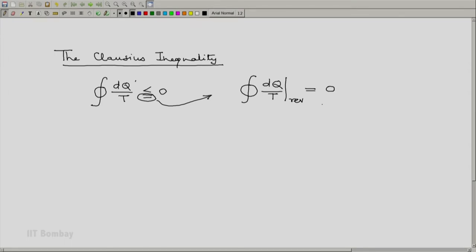And henceforth we will be using this subscript, either something like this or something like this, means this pertains to the reversible limit, either an r as a subscript or rev as a subscript.